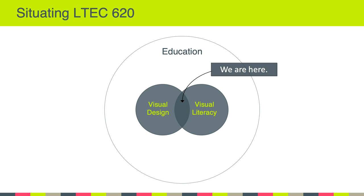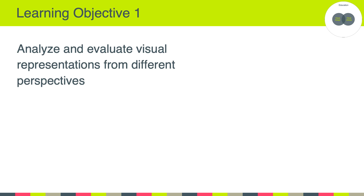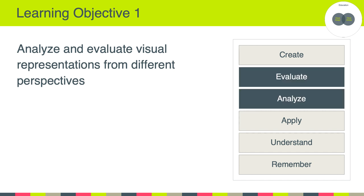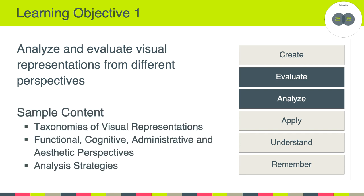So now that we know where we are, the next natural question is: what are we going to do? In other words, how are we going to make sure that we're learning enough to answer those overarching questions? This brings us to the course objectives. Our first learning objective states that we will analyze and evaluate visual representations from different perspectives. Relating this to Bloom's taxonomy, we're focusing on analysis and evaluation.